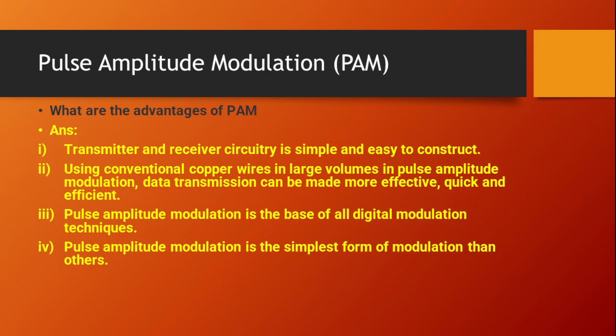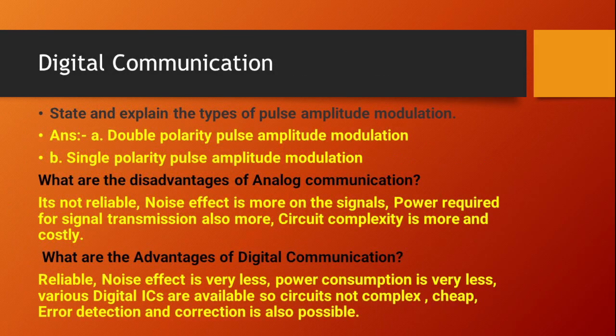What are the advantages of pulse amplitude modulation? The transmitter and receiver circuitry is simple and easy to construct using conventional copper wire in large volume. Data transmission can be made more effective, quick, and efficient. Third, it is the base of all digital modulation techniques. Finally, pulse amplitude modulation is the simplest form of modulation compared to others.